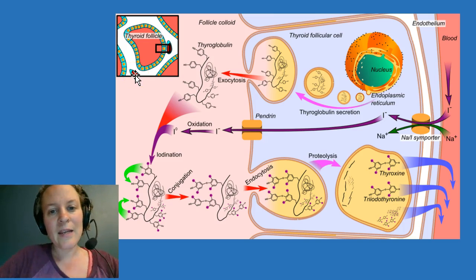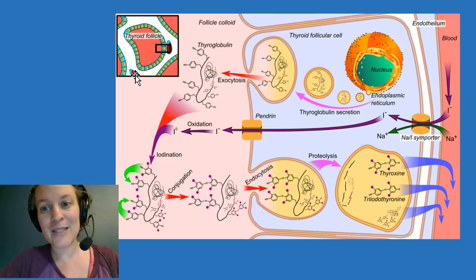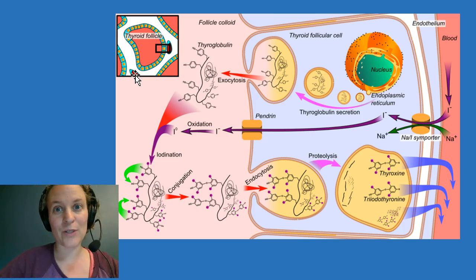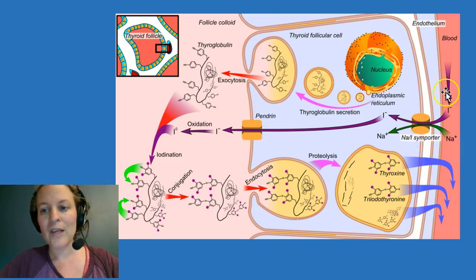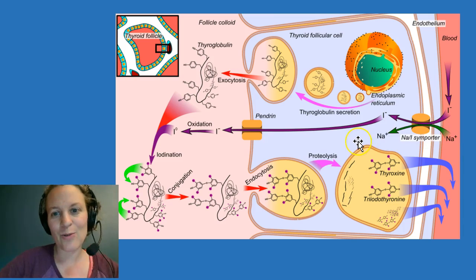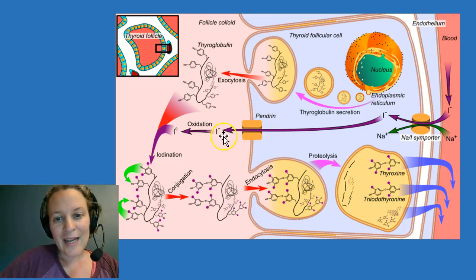In order to make thyroid hormone, you need iodine, and you get that from your diet, hopefully. So we eat foods that are iodine-rich. The iodine is transported as iodide in the blood, and the thyroid cells actively recruit—they actively pull in that iodide via this sodium-iodide symporter, or the NIS. You'll sometimes see it called. So it's pulled in here to the thyroid cell, and it actually travels right through the cell and out the other end via this pendrin transporter.